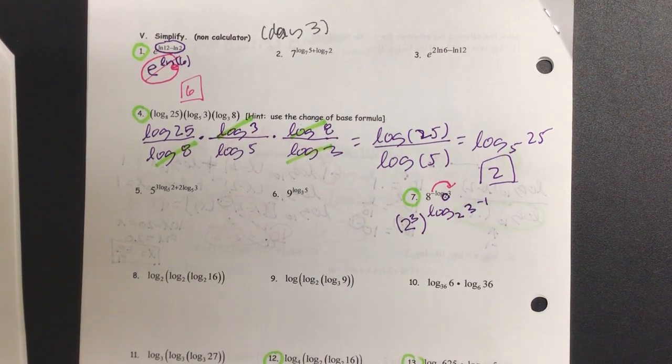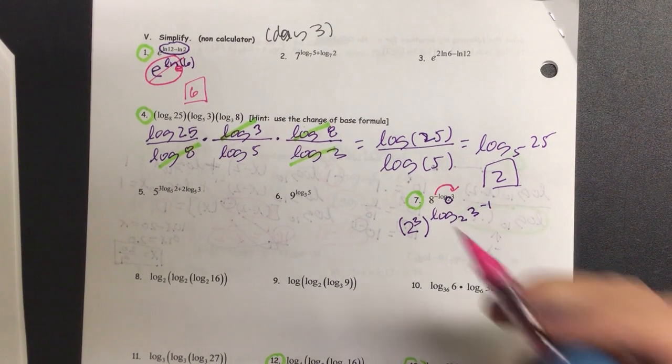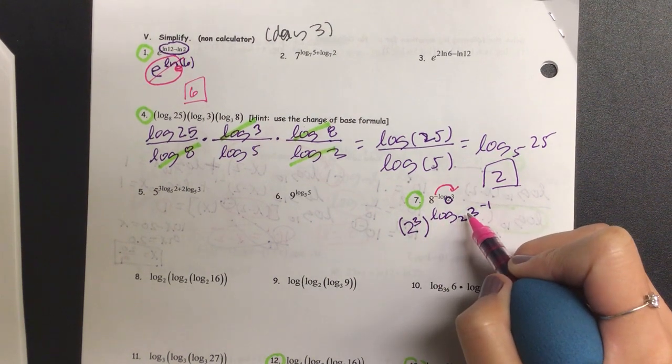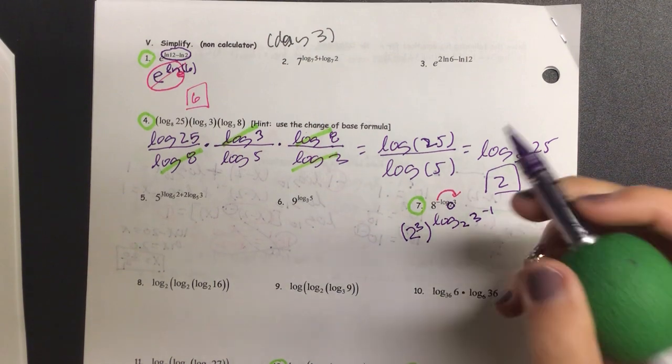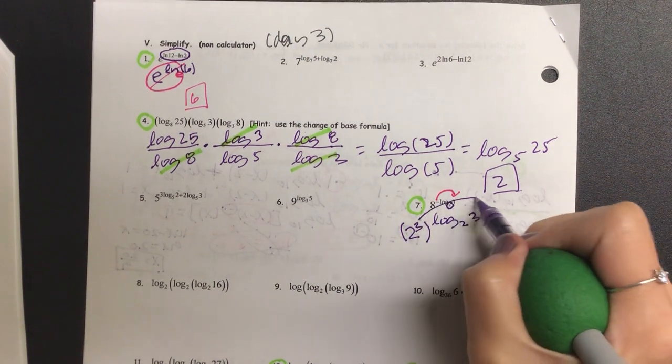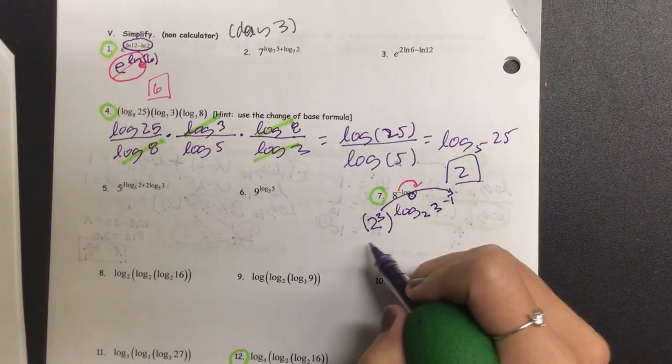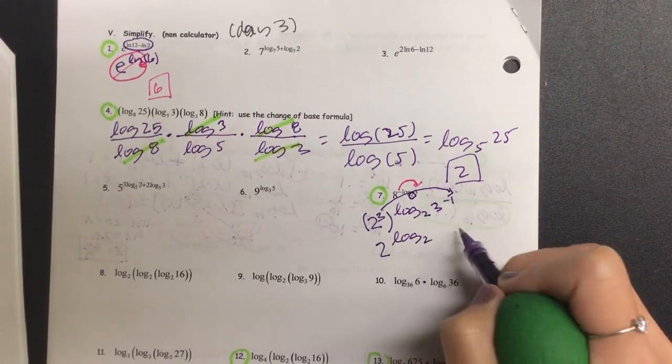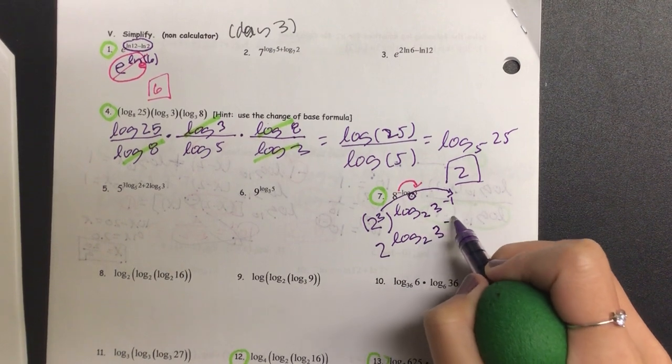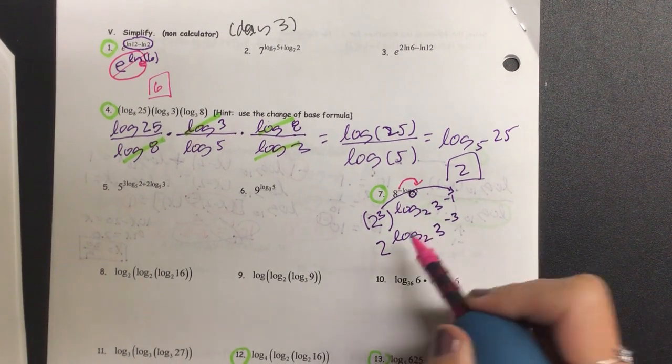And then something unique. When you have a power over a power, they multiply, right? Now, even when they multiply, can I go ahead and move that 3 to the other power and multiply it as negative 3? Yeah? Let's rewrite it. 2 to the power of log base 2 of 3 to the negative 3. What do you notice right here?